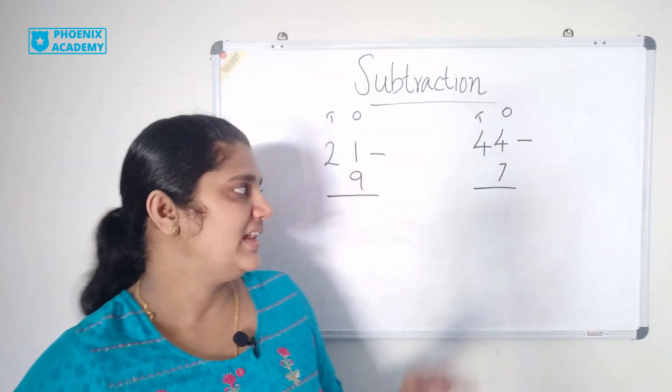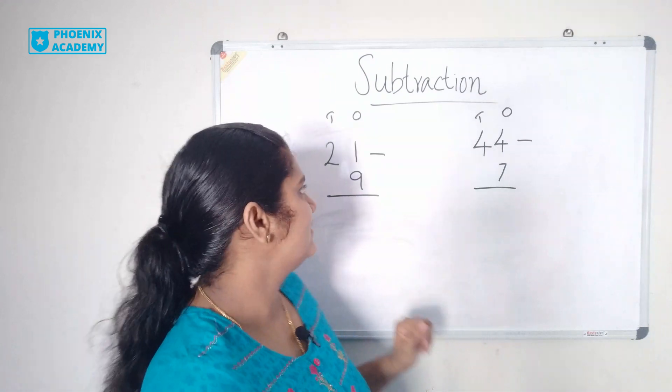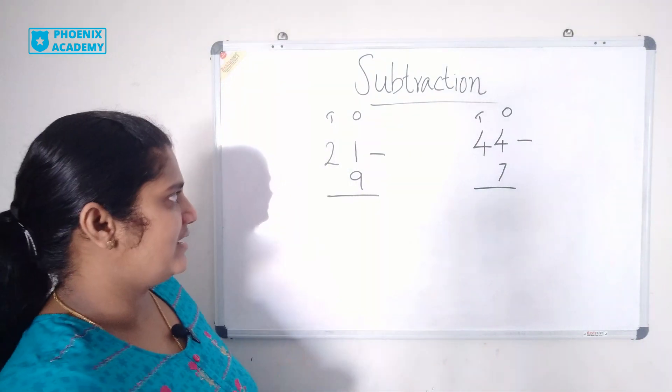Subtraction by regrouping. Let's solve these examples. 21 minus 9.